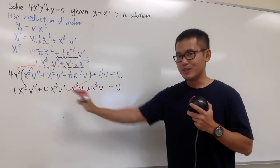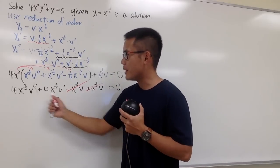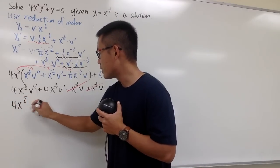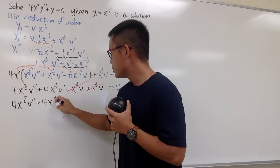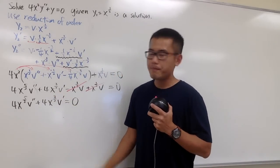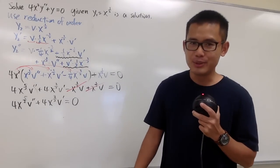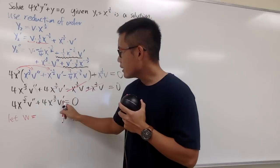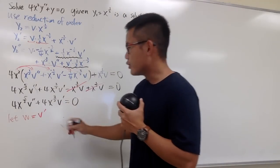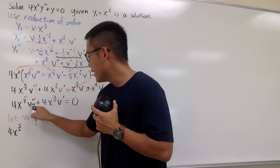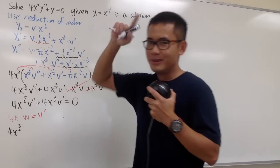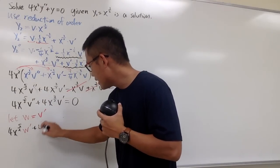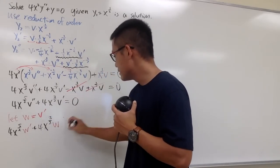So we have 4x^(5/2) · φ double prime plus 4x^(3/2) · φ prime = 0. To solve this, we do a substitution: let w = φ prime. Then φ double prime = w prime, and the equation becomes 4x^(5/2) · w prime + 4x^(3/2) · w = 0, which is a first-order differential equation in w.